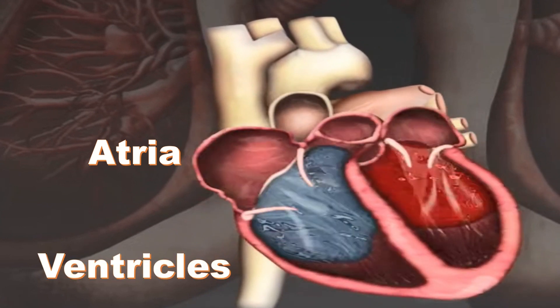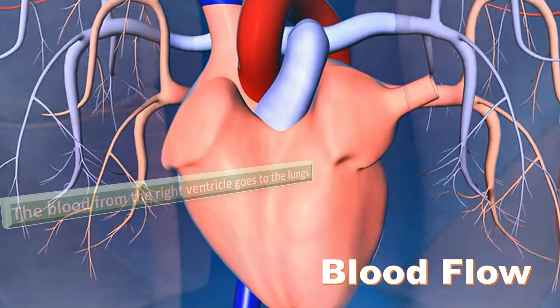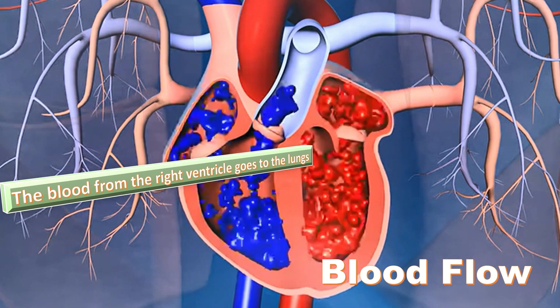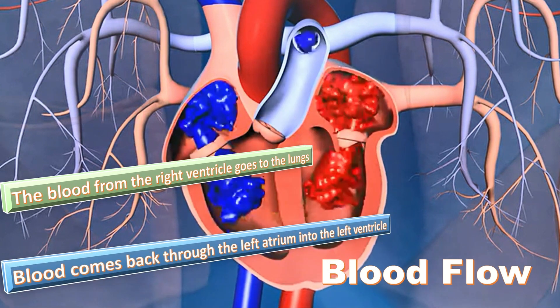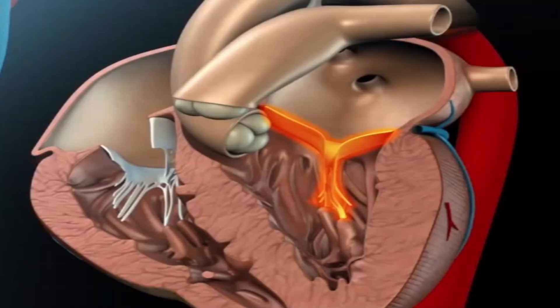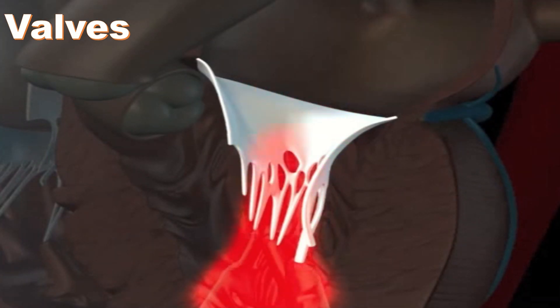The blood from the right ventricle goes to the lungs where oxygen is added and carbon dioxide is removed. This blood comes back through the left atrium into the left ventricle, which then pumps it to the rest of the body where oxygen is used. Valves control the flow of blood into and out of the ventricles.